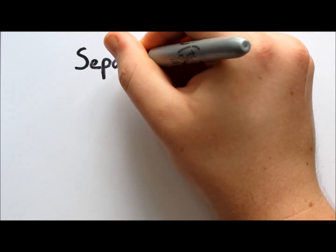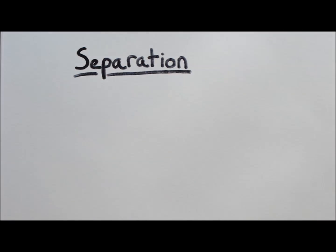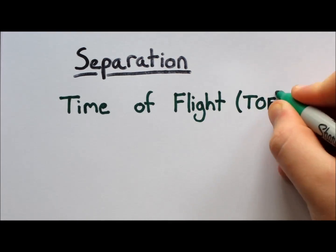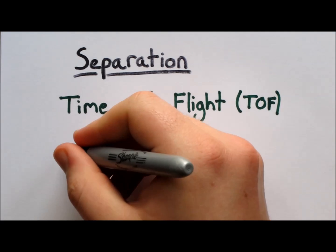Now the ions have been formed, they need to be separated. As with ionization, there are multiple ways this can be achieved. However, one of the most common and easy to understand is time of flight.